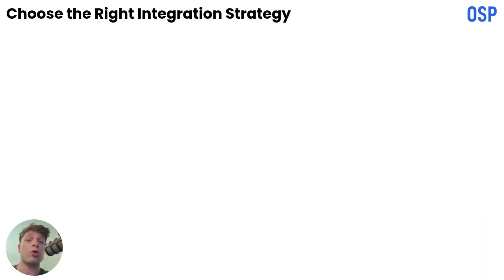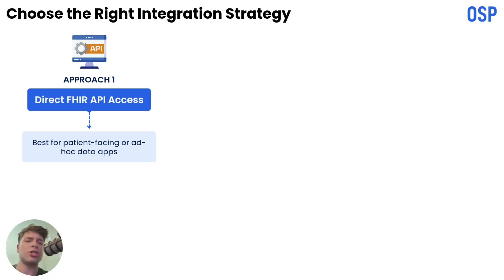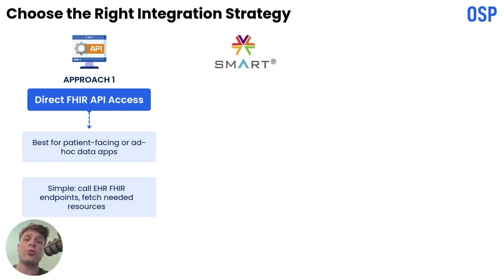First, decide how your app will connect. There are three common approaches, and picking the right one up front prevents a lot of rework. If your app is patient-facing or pulls data ad hoc, direct FHIR API access is often the best. It's straightforward — you call the EHR's FHIR endpoints and read the resources you need.